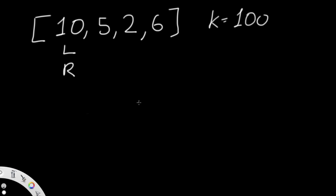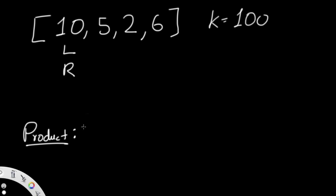Here's the overall idea: our right pointer moves to the right, and we keep moving it while the cumulative product remains less than k. Once the product becomes greater than or equal to k, we move the left pointer until the product drops below k again. Each time we move the right pointer, we add the count of new valid subarrays to our result. We also track a product variable starting at 1 and a result variable starting at 0.